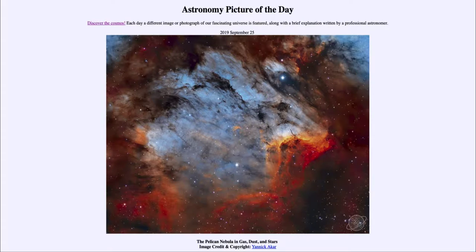Well, this is the Pelican Nebula, also known as IC5070, and it is an example of an emission nebula. Now, an emission nebula occurs when energy from a star excites gas around it and causes it to glow.